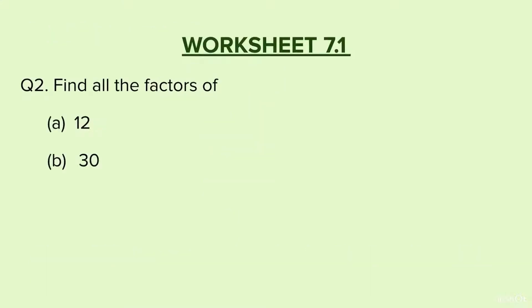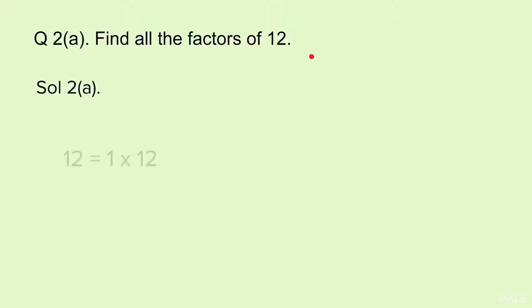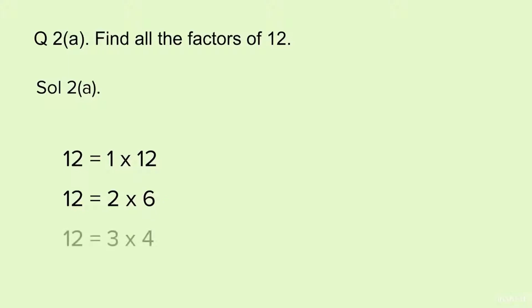Question 2: Find all the factors of 12 and 30. To write all the factors of 12, we will start with 1. We write 12 as multiplication of 1: 12 = 1 × 12. Then 12 = 2 × 6. Moving on, 12 = 3 × 4. Now since after 3, 4 comes and 4 is already there in the list, you will not check any further.